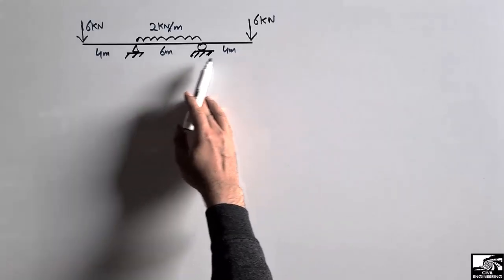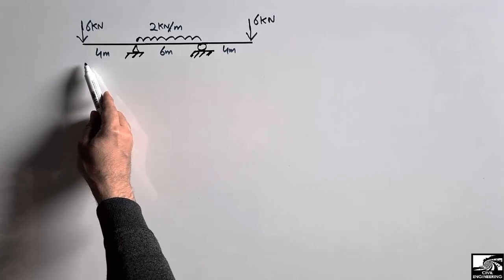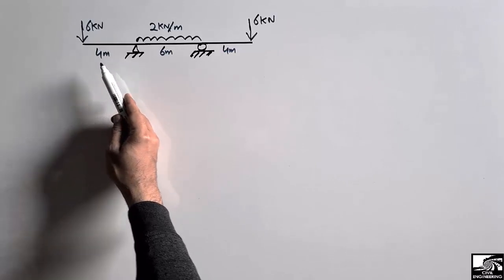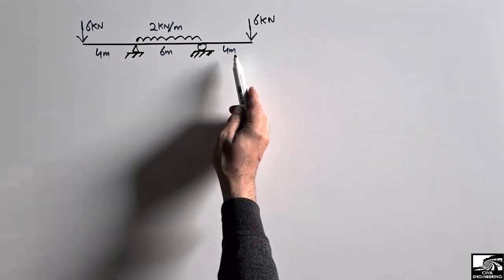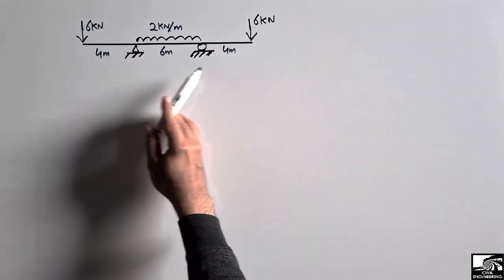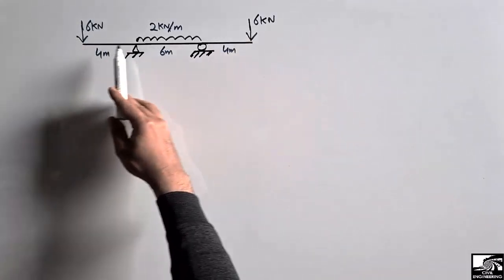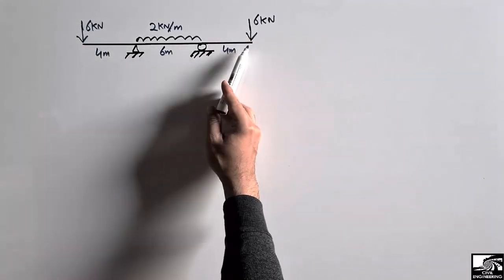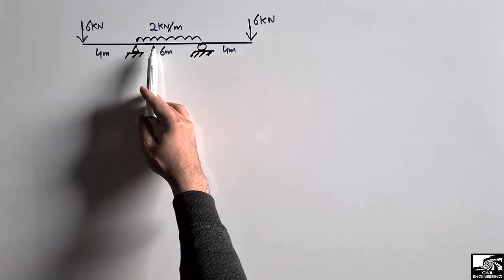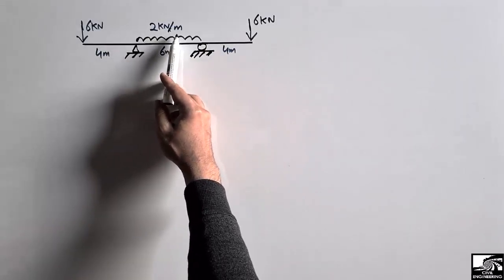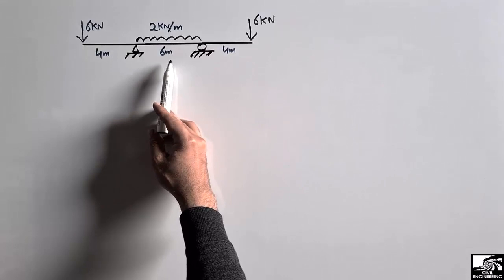This is an overhanging beam of total length 14 meters. The overhanging portion on each side is 4 meters. There are two point loads of 6 kilonewton acting at each end, and the mid portion is loaded with a 2 kilonewton per meter distributed load over a distance of 6 meters.